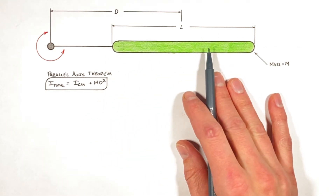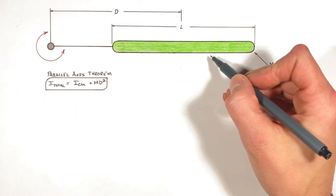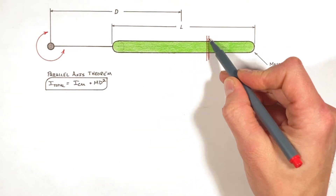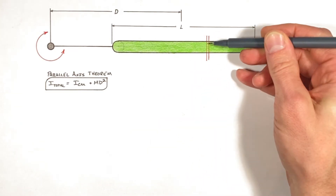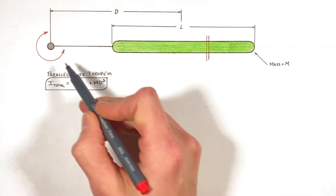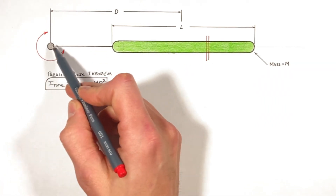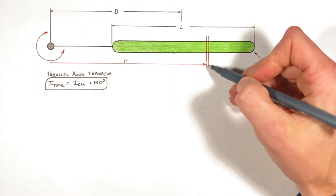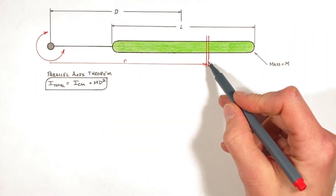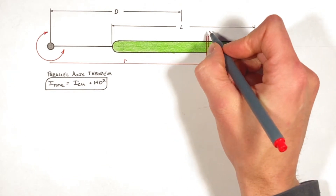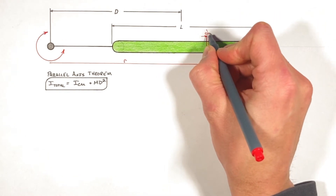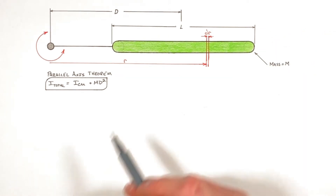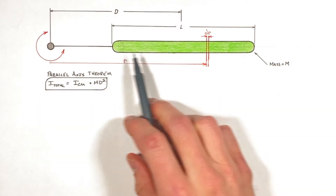Much like when deriving the rotational moment of inertia of a rod around any point, we're going to take this rod and break it up into slices. We want to look at all the mass that's at a particular radius or distance away from the axis of rotation. So we say this slice is at some distance r away from the axis of rotation and has some thickness dr — an infinitely small change in radius.